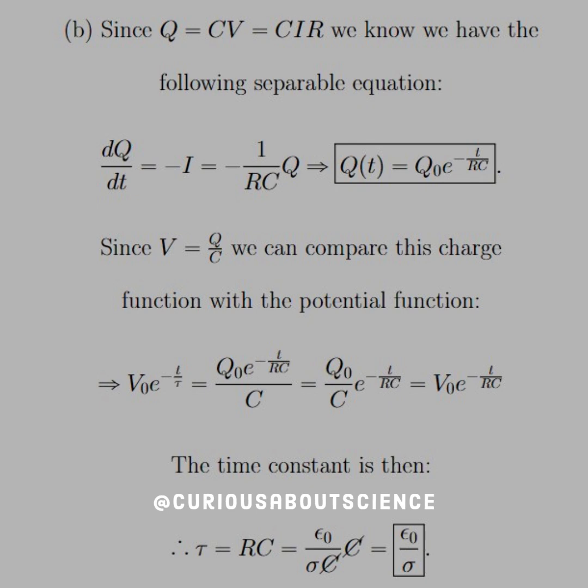dQ/dt is equal to negative I. Again, we've seen this before. We've seen exactly how it happened a couple questions ago.